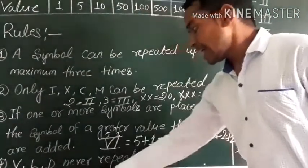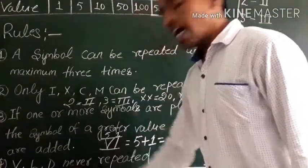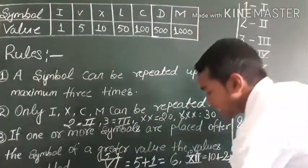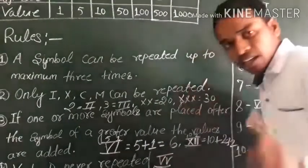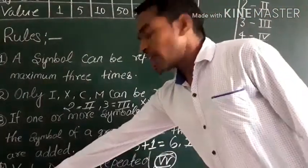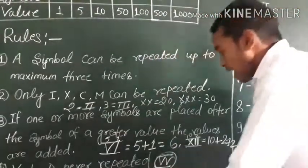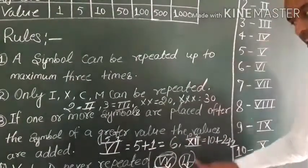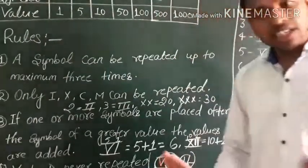Rule number 4: V, L, and D never repeat. We can see that V, L, and D cannot be repeated at all. For example, to write 100 we do not write LL, because L is 50 and repeating it as LL is not allowed. Similarly, VV is wrong. So V, L, and D will never repeat.